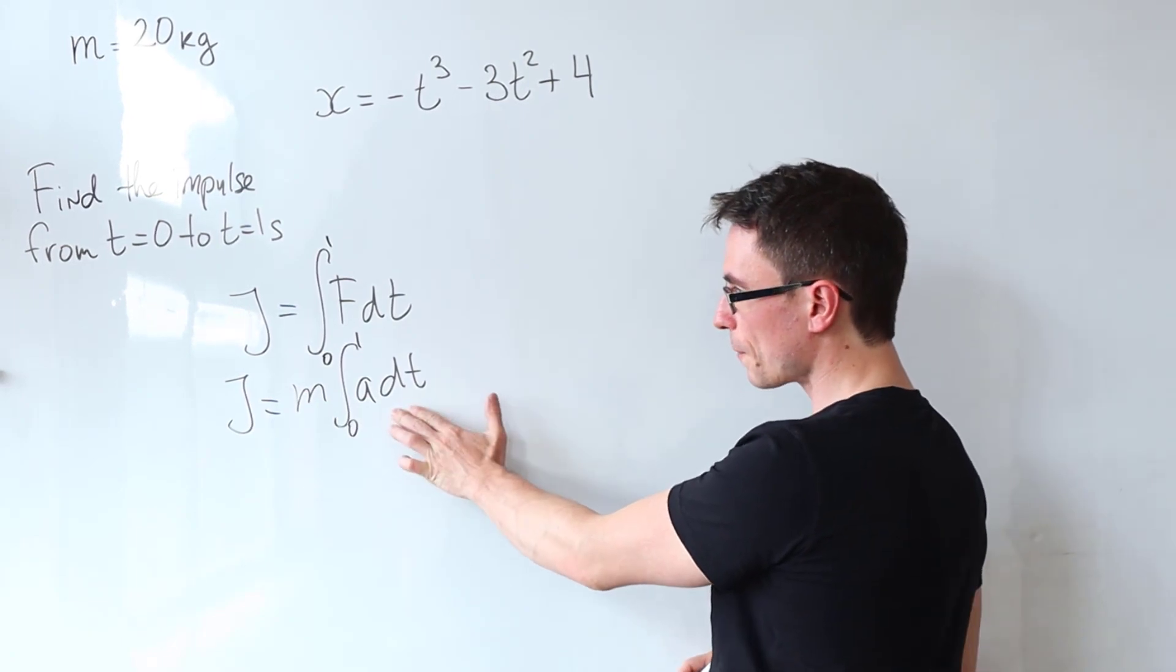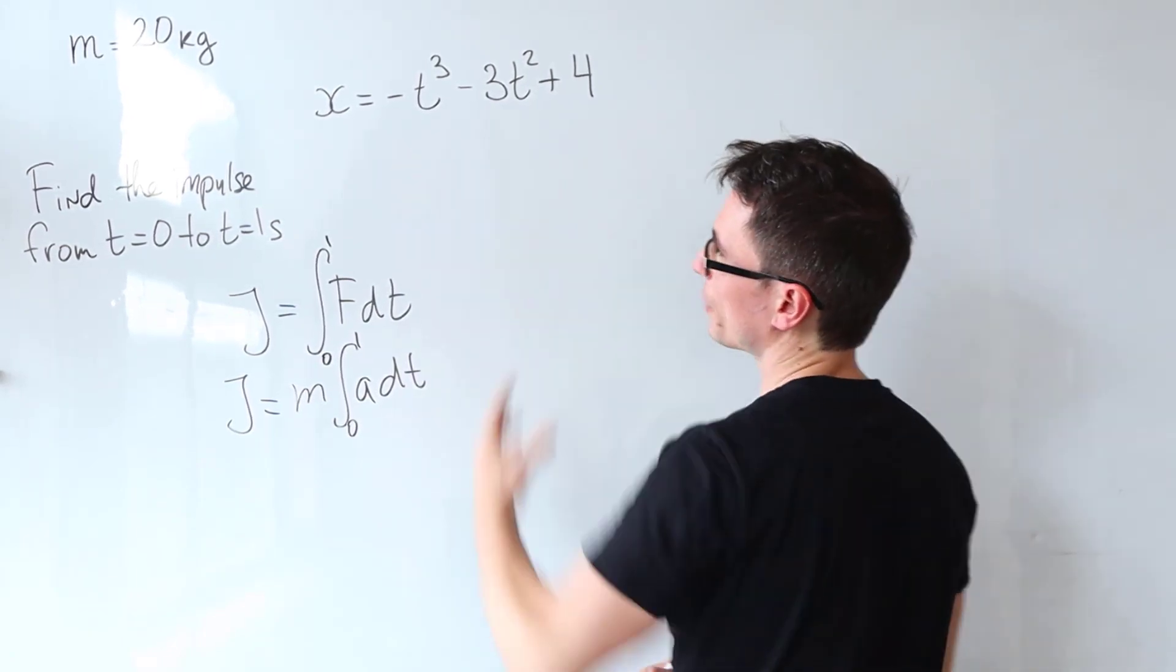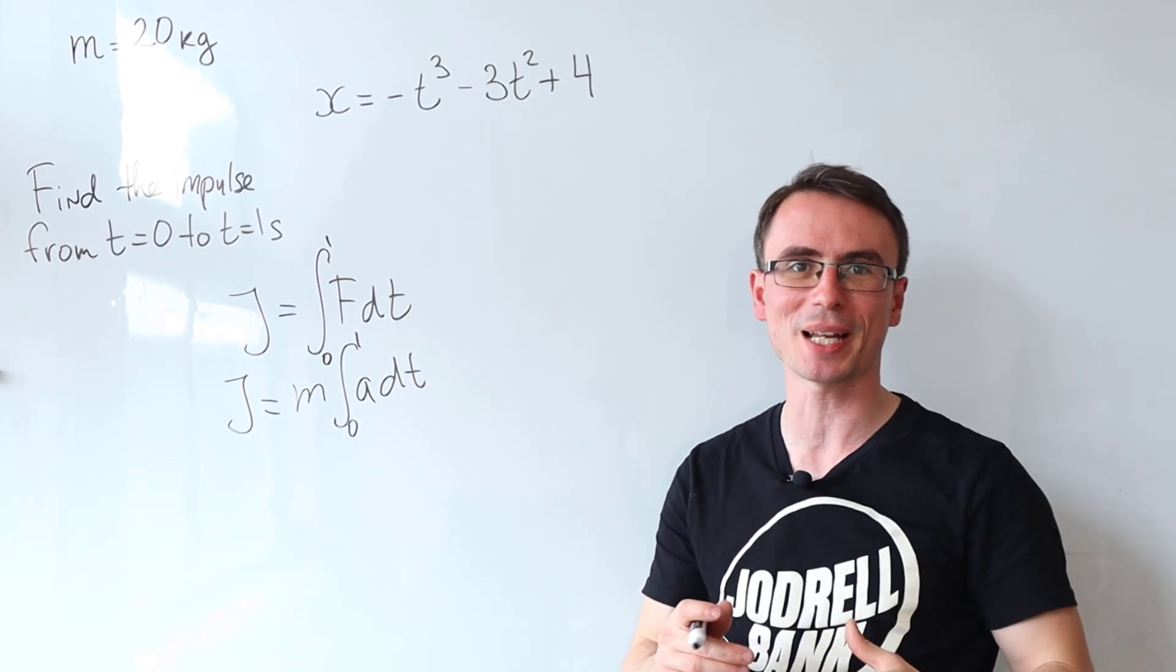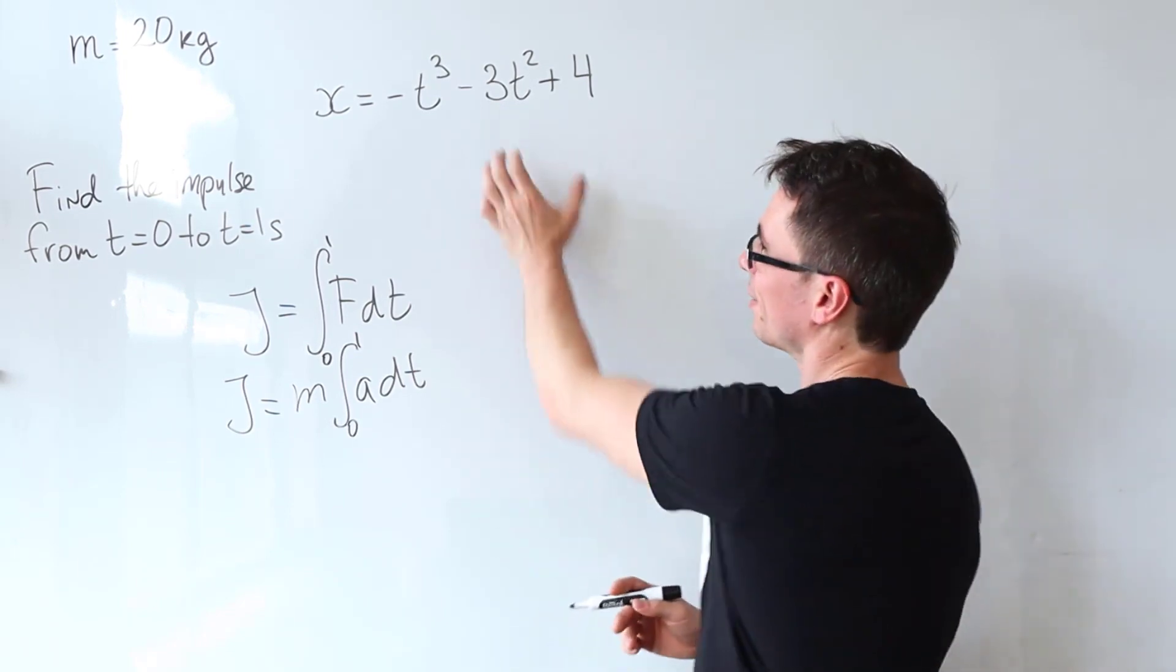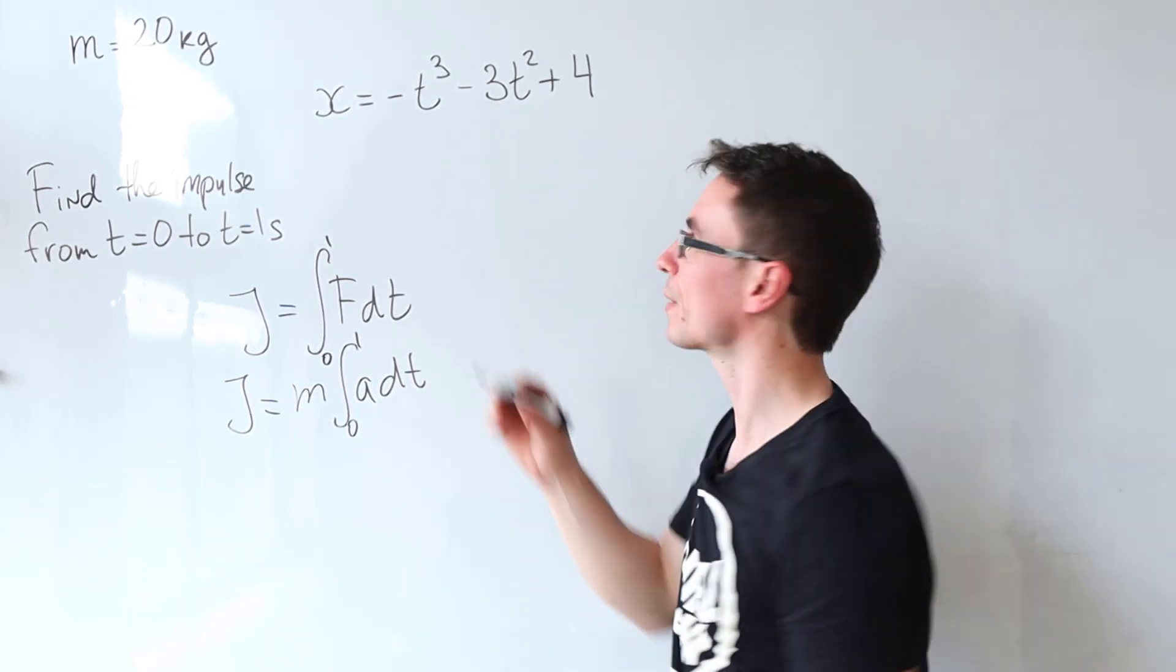How do we find the acceleration? That is the second derivative of the displacement. So all we need to do is differentiate this twice with respect to t.